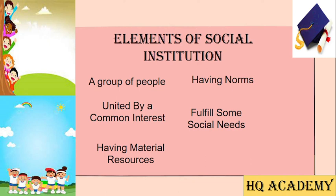Another element is material resources — for example, economic institutions — where everyone aims to have resources that fulfill their basic needs. There are also norms, culture, rituals, and customs that people want to adopt to live their lives. All institutions not only fulfill your financial needs but also give you social needs, such as the need to interact with others when you live in society.